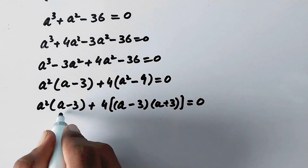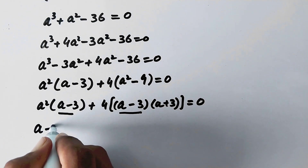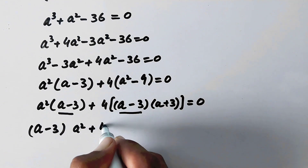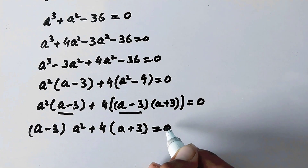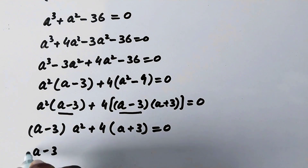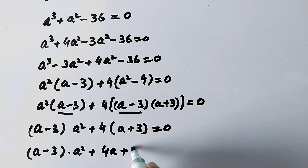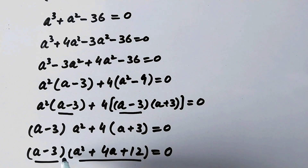Now we take (a minus 3) as common from the whole expression, giving (a minus 3) times (a squared plus 4(a plus 3)) equal to 0. Multiplying out the 4 gives (a minus 3) times (a squared plus 4a plus 12) equal to 0. We can see there are two factors equal to zero and we will have two solutions.